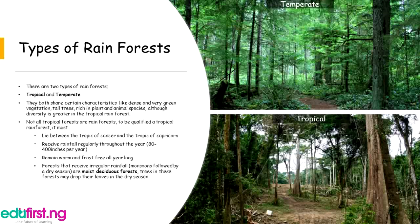Forests that receive irregular rainfall — monsoons followed by a dry season — are moist deciduous forests. Trees in these forests may drop their leaves in the dry season.